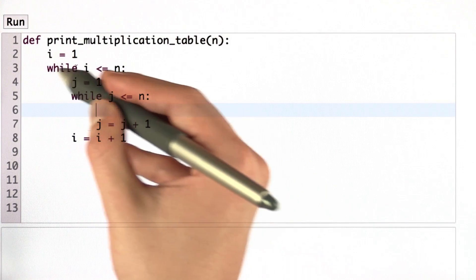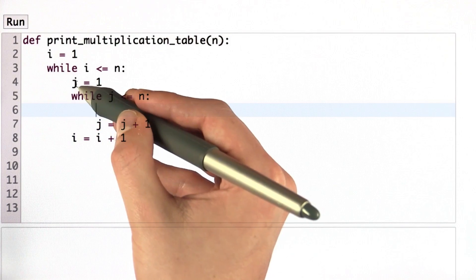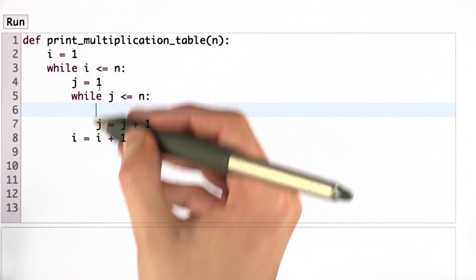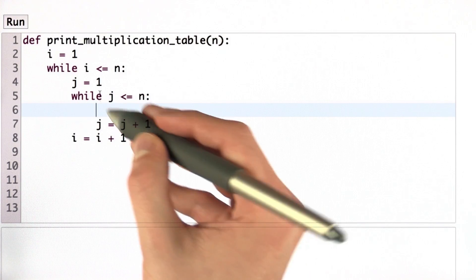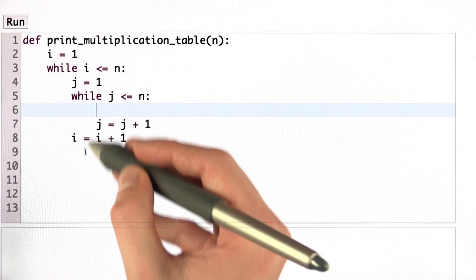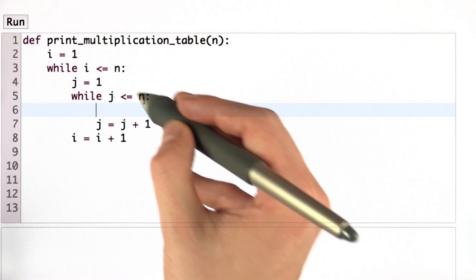Everything in the body of this while loop is indented twice over from the beginning. Once for the function definition, and another time for this while loop. Everything in the inner while loop is indented 3 times, once for the function definition, once for the first while loop, and a third time for this inner while loop.